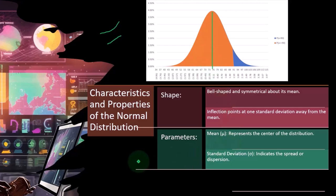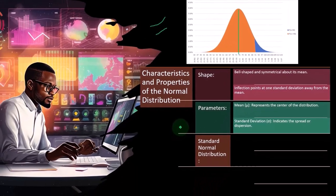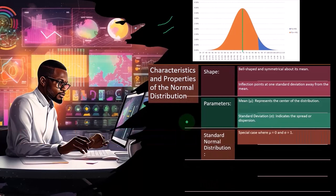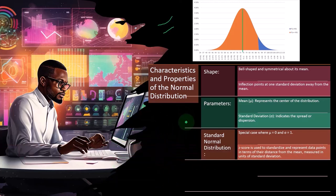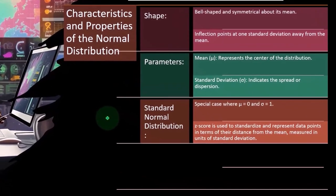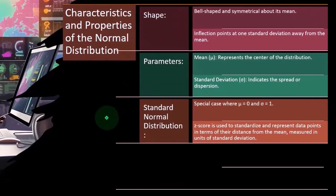There's the standard deviation. So standard normal distribution, special case where mu equals zero and sigma equals one. That's kind of like a special normal textbook kind of case where you have mu right at the middle point at zero.